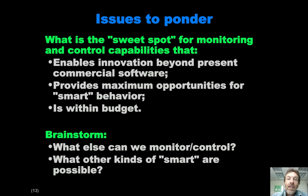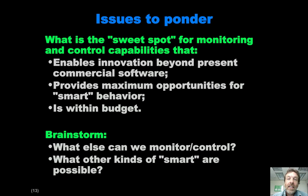I'd like everybody to think about what would constitute a sweet spot for the monitoring and control capabilities, and thus for the software as a whole, that enables us to create some innovation. There should be some aspect of our software that will go beyond the state of the art. Beyond having just one thing, I'd like to see as many opportunities for smart behavior as possible. We've had discussions about applying machine learning algorithms so that the house can actually predict what it should be doing with respect to its systems prior to the occupants having to manually set them — but that's only possible with the appropriate kinds of monitoring and control.